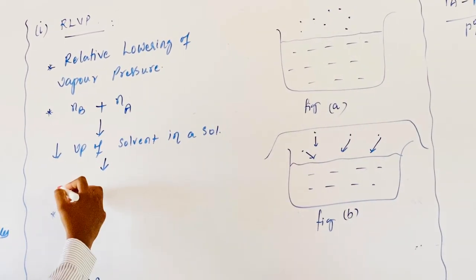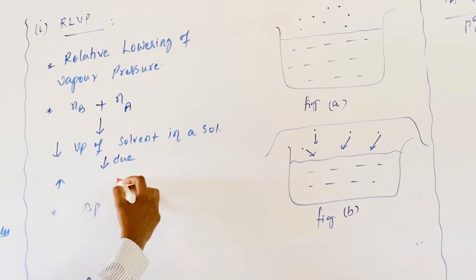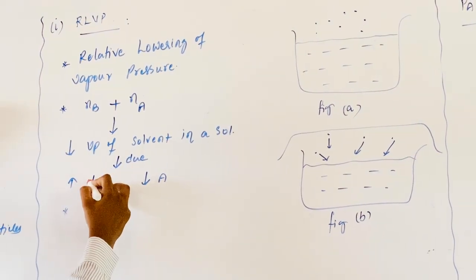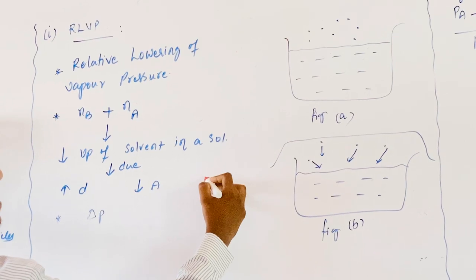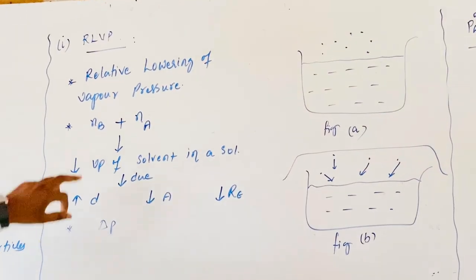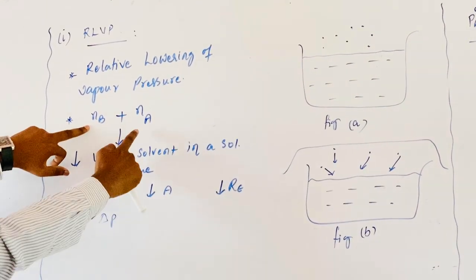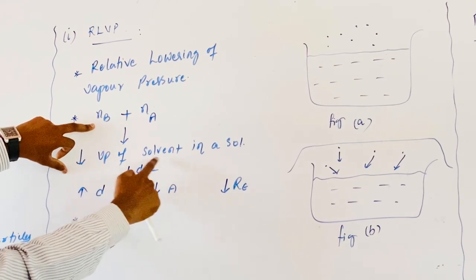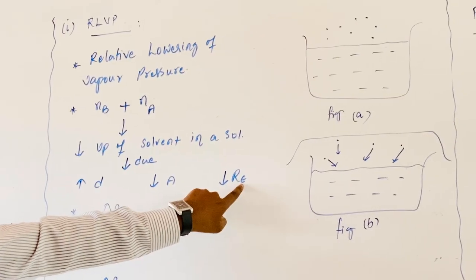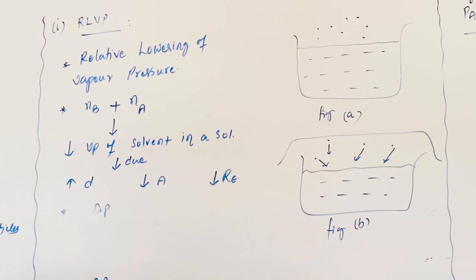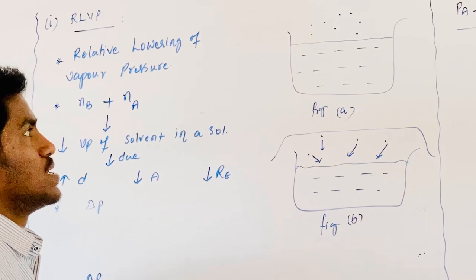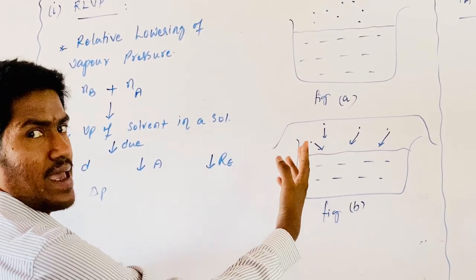While adding a non-volatile solute to a volatile solvent, it causes decreasing of vapor pressure, increasing of density, decreasing of surface area, and the rate of evaporation also gradually decreases. While taking a beaker with some solution, the solution is a combination of solute and solvent. Hence it is a binary solution.